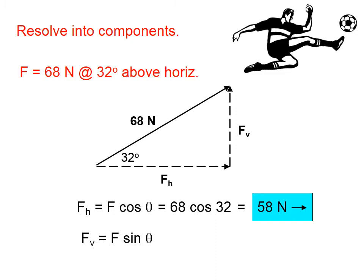We're going to do the same thing with the vertical force component. F sub v is equal to the hypotenuse, you might think of this as, times the sine of 32, and that's 36 newtons. Again, that is a vector, so you must give it a direction upwards.